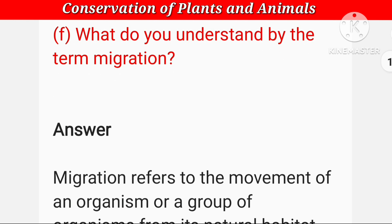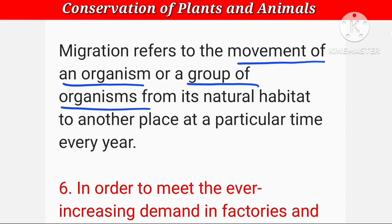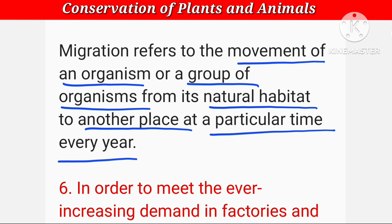What do you understand by the term migration? Migration का मतलब होता है एक जगह से दूसरी जगह जाना। Migration refers to the movement of an organism or a group of organisms from its natural habitat to another place at a particular time every year। जैसे बहुत सारे birds और fish हैं — जब उनके लिए वहाँ का climate suitable नहीं होता, तो वो दूसरे areas में चले जाते हैं — यह कहलाता है migration।